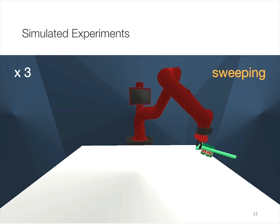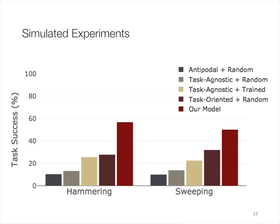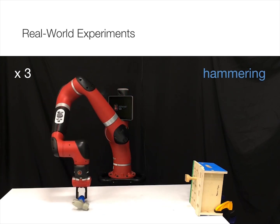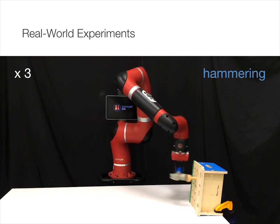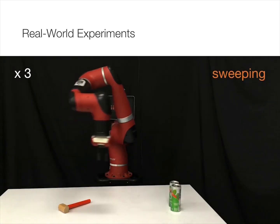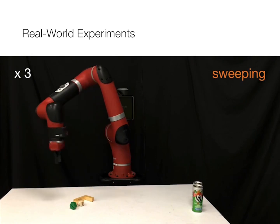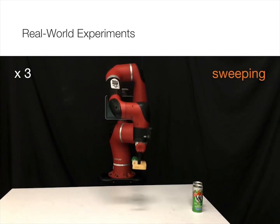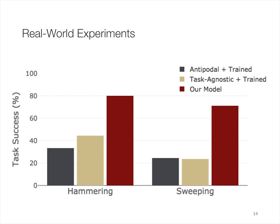We compare our model with multiple baselines using random antipodal grasps, task ergonomic grasps, as well as baselines using a random manipulation policy. We found that jointly learning the grasping model and the manipulation policy leads to the best performance. We also perform real-world robot experiments using the model trained from simulation, with no explicit sim-to-real domain adaptation. Our model is capable of using 9 unseen real-world objects as tools, achieving 80% and 71% task success rates for hammering and sweeping respectively, outperforming all baselines.